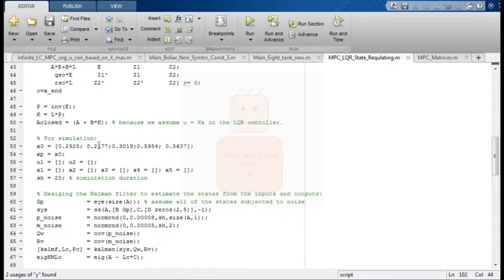For the simulation, we need to define some variables such as the initial states X sub 0 as well as the simulation horizon SH. As we need the process states as feedback, we are required to design the Kalman filter. Here, I am using the MATLAB function Kalman for that. I assume that all states in the process are subjected to some noise which I called P noise. The outputs are also assumed to be contaminated with the M noise. Once again, one can check the stability of the Kalman through the eigenvalues of the matrix SIG K MLC.